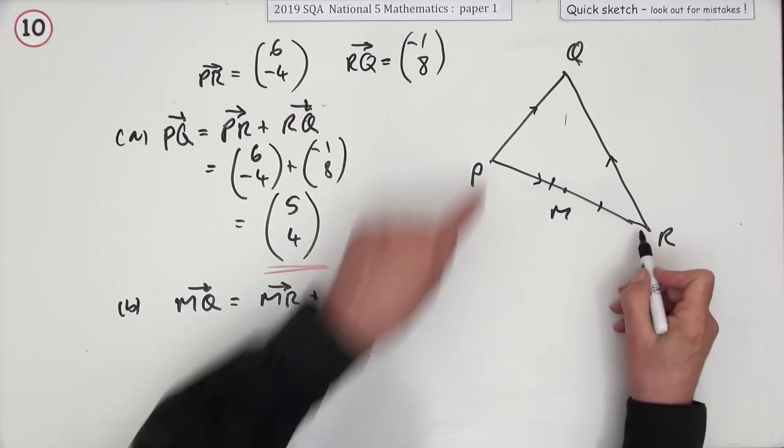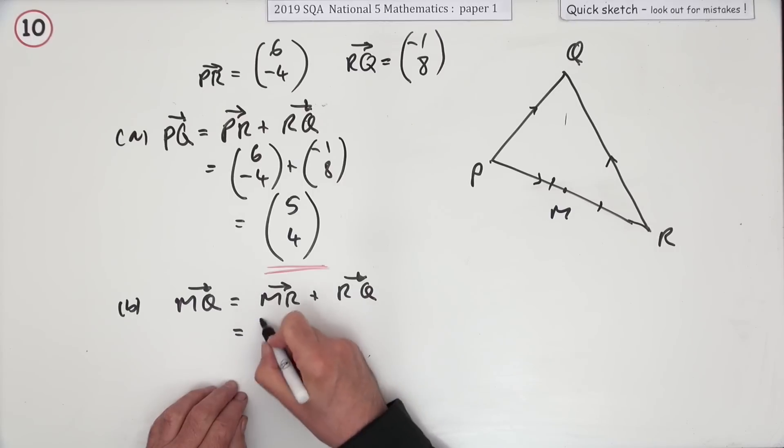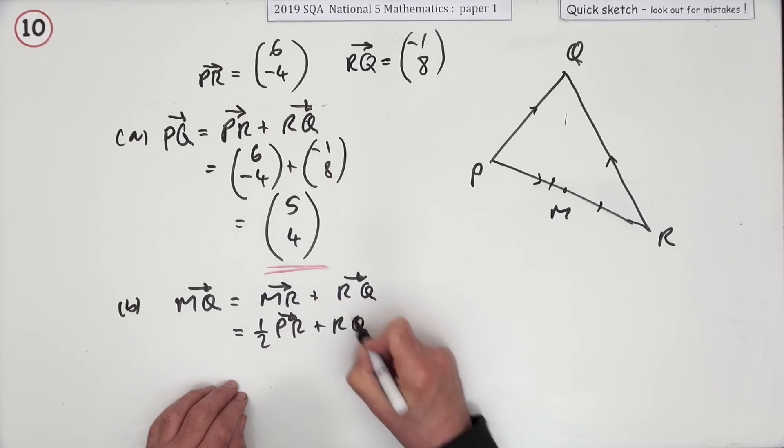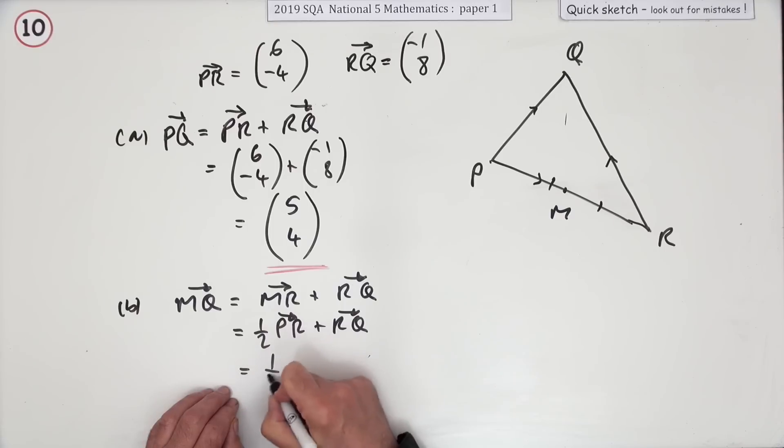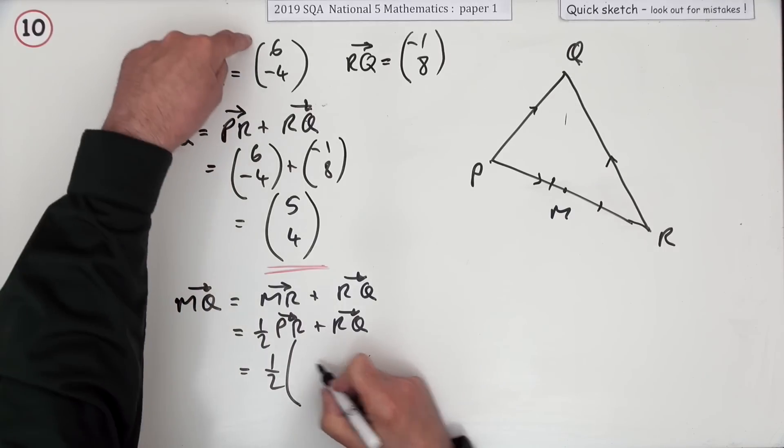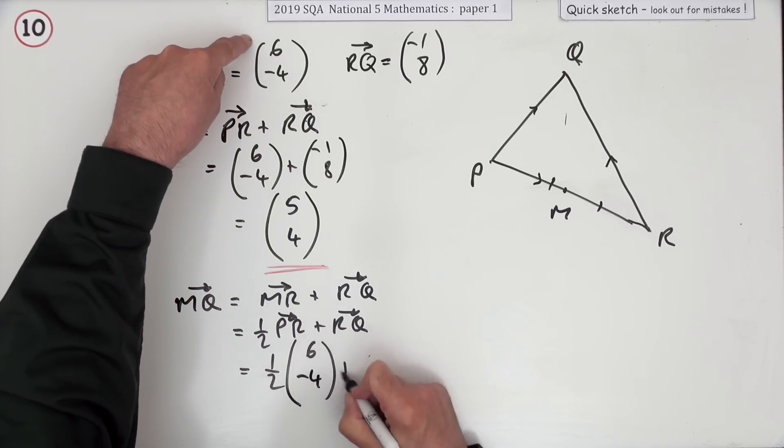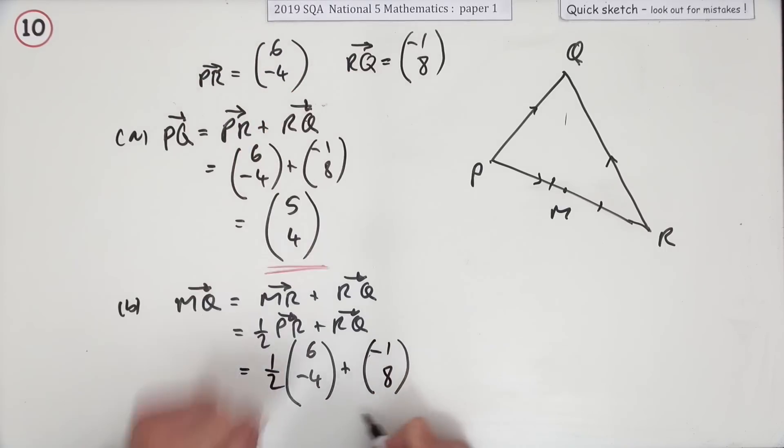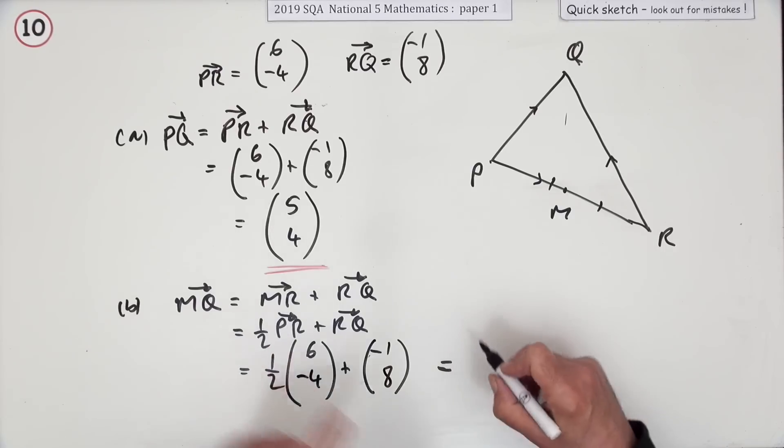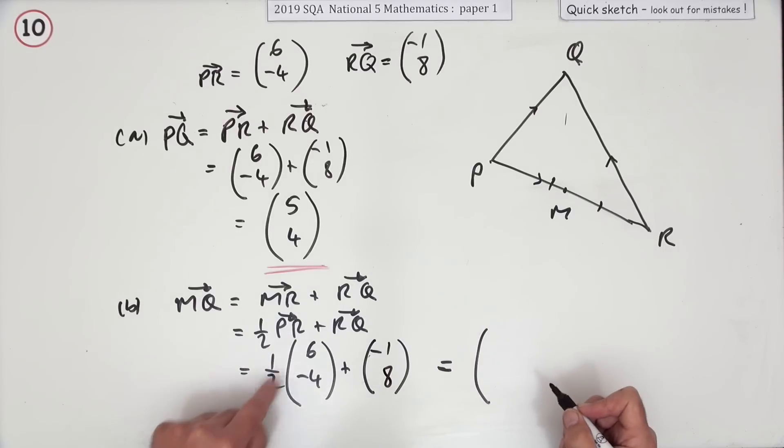What's M to R? Well, it's half of PR, and you know PR. It's a half of PR and then R to Q. So it's a half of PR, which was (6, -4), plus RQ, which is (-1, 8). Now you could half them first then add them, or you could just be brave and go straight in with the answer here. A half of 6 is 3, take away 1 is 2. A half of -4 is -2, plus 8 takes you to 6.